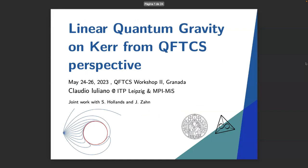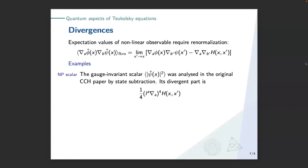Now we can finally discuss divergences. This is usually a pretty slippery argument, so we wear our anti-slip socks and do point-splitting renormalization. You have your observable, which in our case must be written in a certain form; then you separate the points, remove the part that leads to divergences, and once you do this, you take the coincidence limit and what you get is something finite. That is why it is really important to know the Hadamard parametrix at different orders.